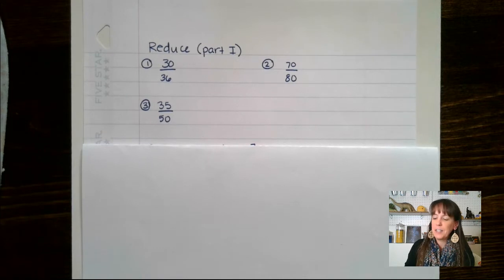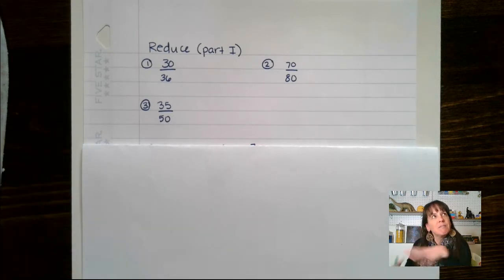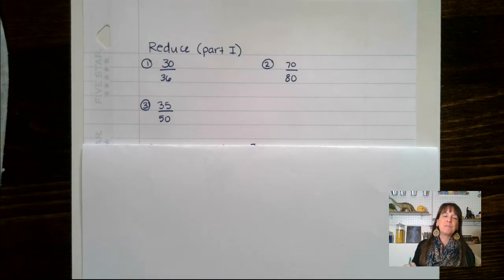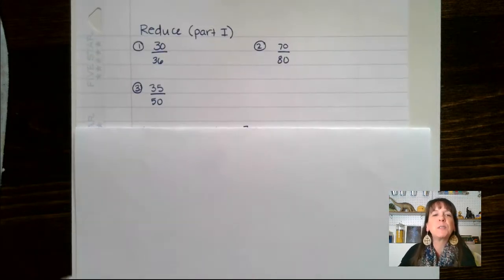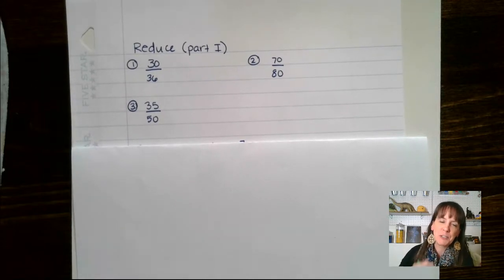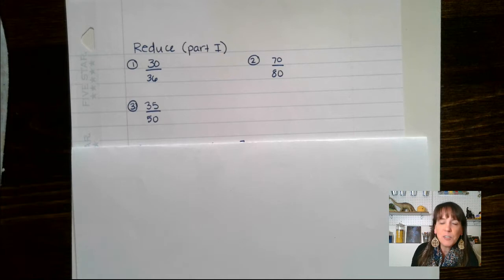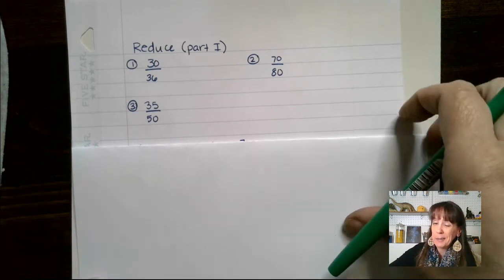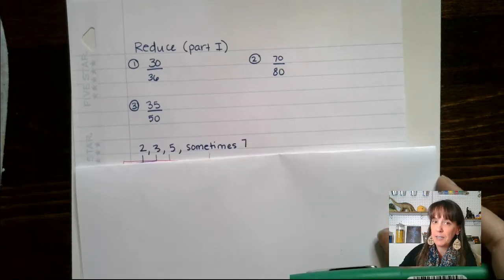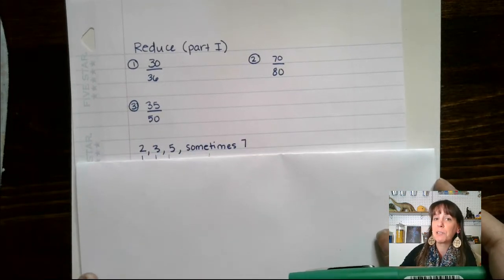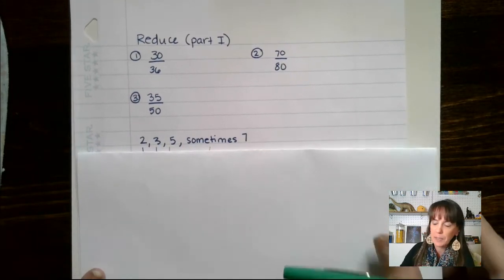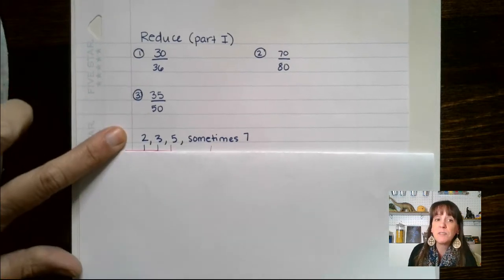We are going to talk now about reducing fractions and refresh this skill set. Oftentimes when you were reducing fractions you were told to find the greatest common factor — that is a great method, you can absolutely do that. However, I found another method I call the 2-3-5, sometimes 7, method that seems to work really well. It's basically the rules of divisibility.